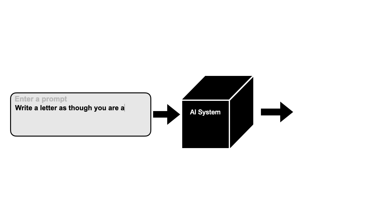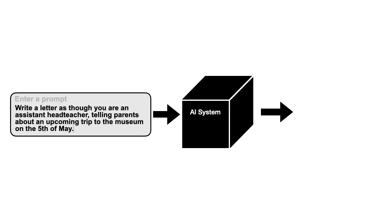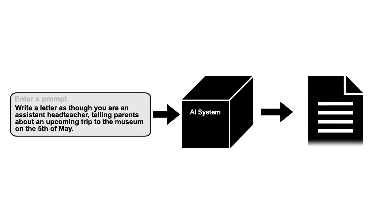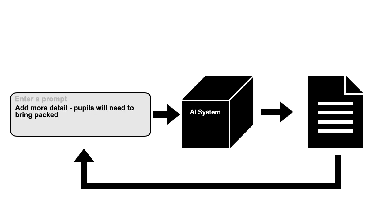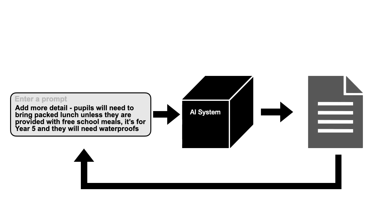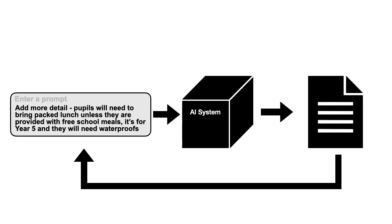Firstly, the user provides a clear and detailed instruction or question for the AI system to work with. Next, the AI system provides an output based on the prompt, such as an explanation, example or completed task. At this point you can evaluate the response and refine your input if necessary, creating a feedback loop for improved results. It's important that we check the output from a large language model for accuracy and bias and then adapt it to be appropriate for our intended use.